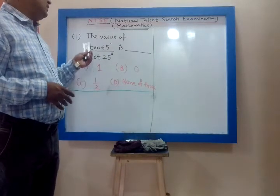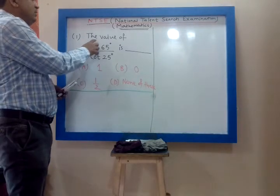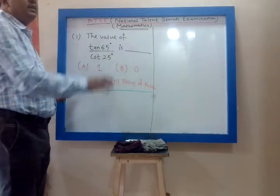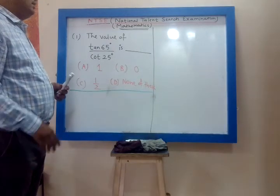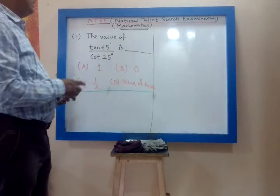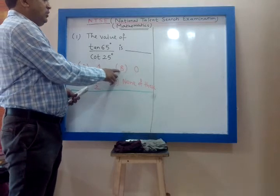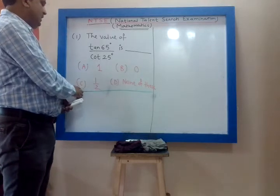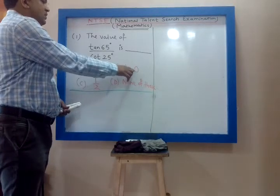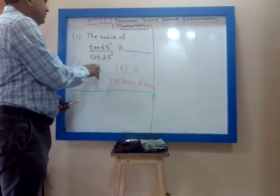On the board you can see the first question: the value of tan 65 upon cot 25. The options are: A is 1, B is 0, C is 1 by 2, and D is none of these — meaning neither 1, nor 0, nor half.